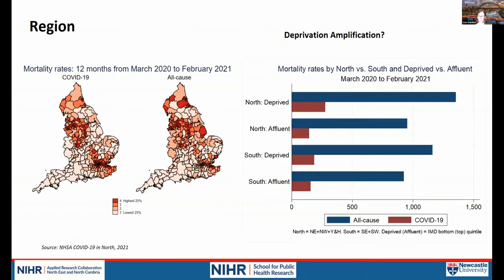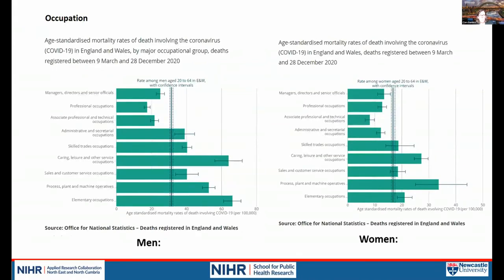This relates to the geographical concept of deprivation amplification: does being in a deprived area within a deprived region amplify the impact of deprivation? This data suggests it might, and a similar relationship appears in all-cause mortality. When talking about the north-south health divide or regional inequalities — a focus of the leveling-up agenda — what we're really describing is a particular burden on deprived communities in the north, compared to affluent or deprived areas in the south.